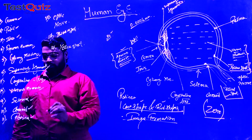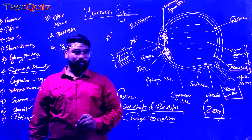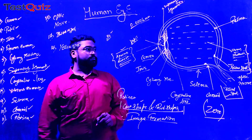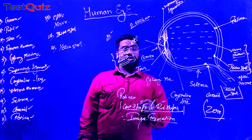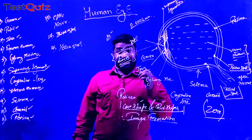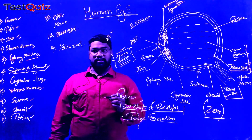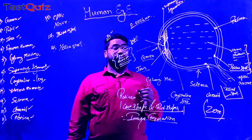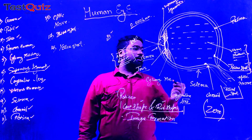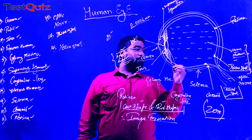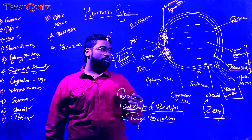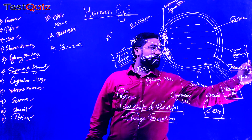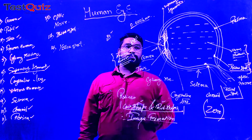Last but not least, we have the retina. Retina is where the maximum cone-shaped cells and rod-shaped cells are present, but we don't have billions of cone-shaped cells and rod-shaped cells there — those billions are present at the yellow spot.